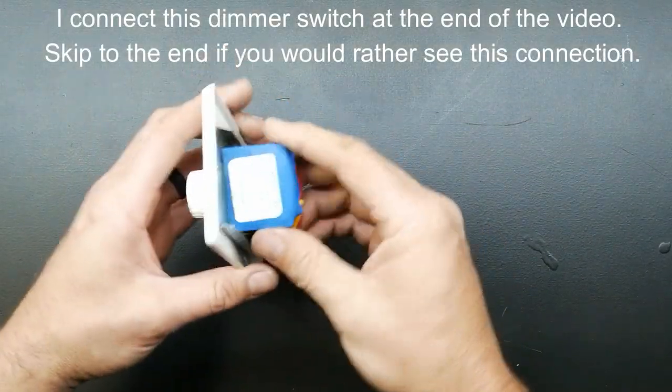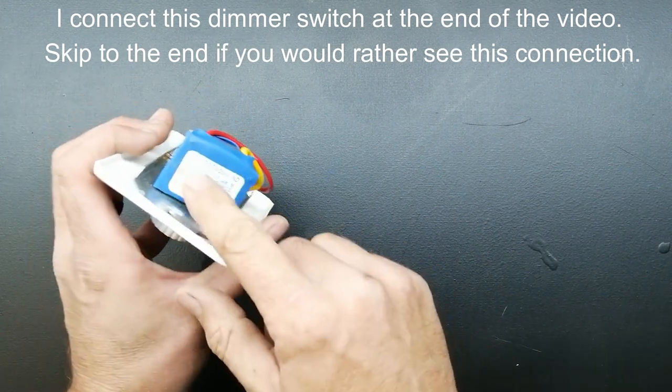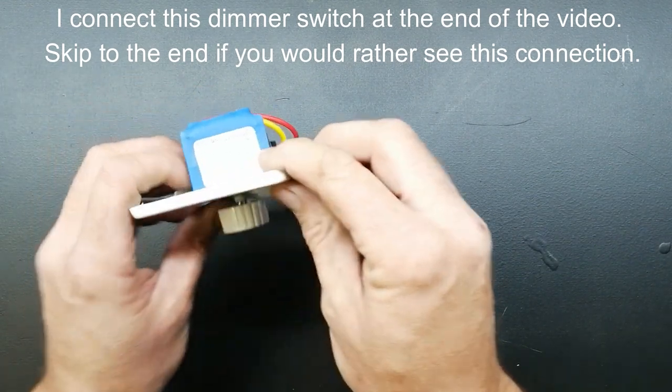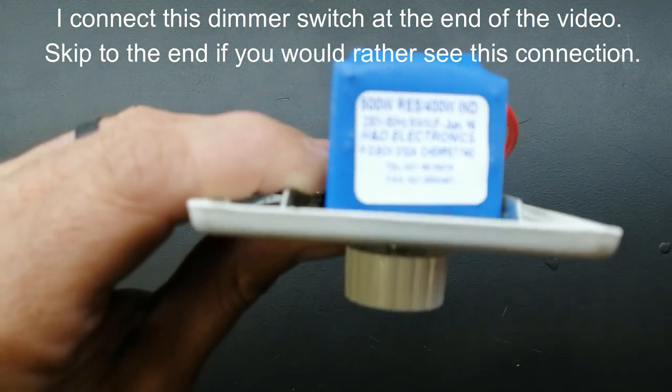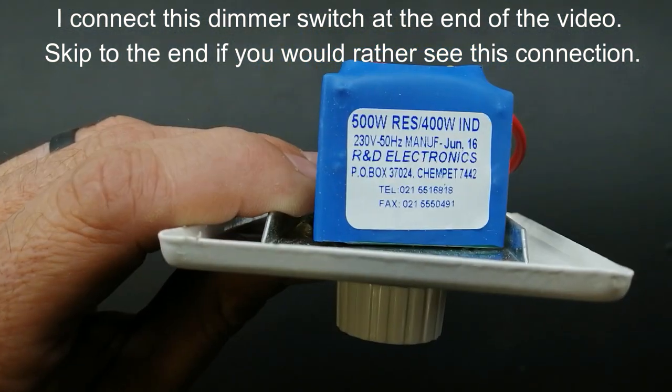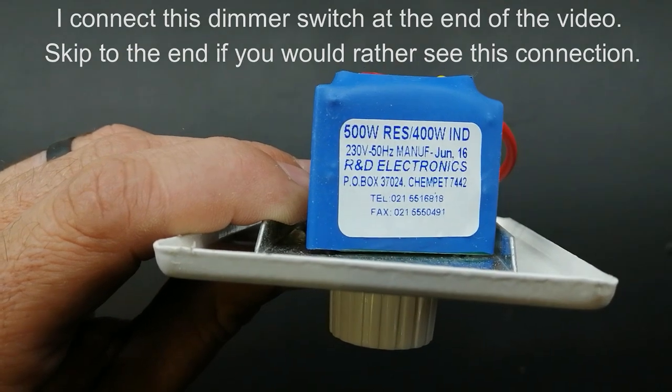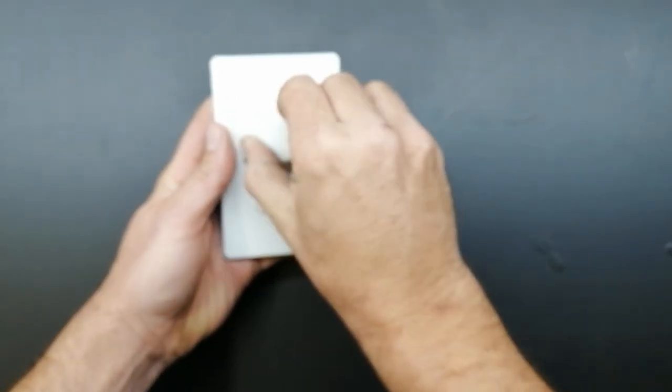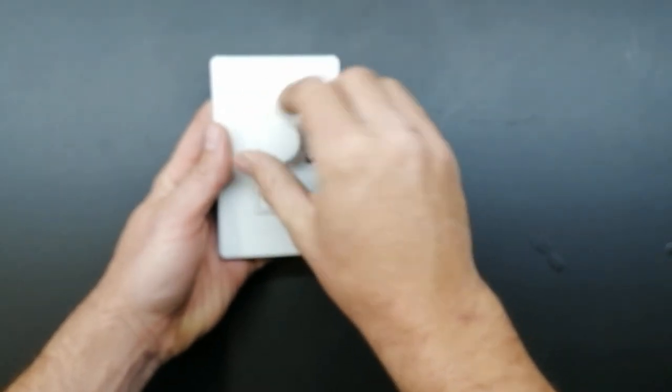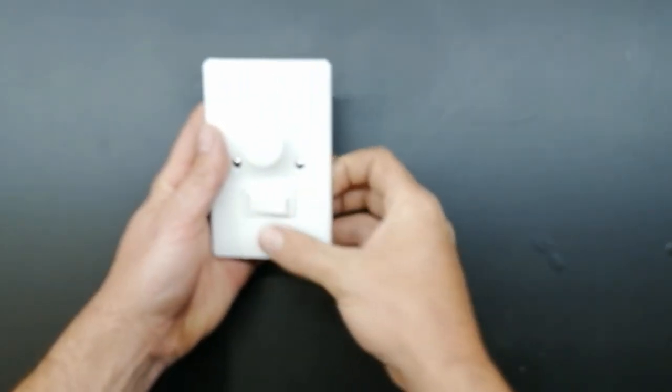I've got one of these dimmers - same principle, 500 watt resistive, 400 watt inductive. I like these a bit more because you can control it better with this switch than with the other one.